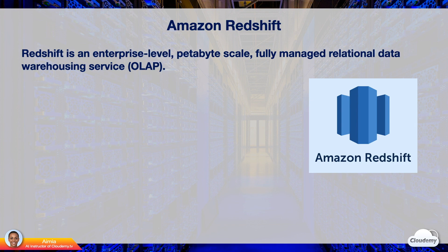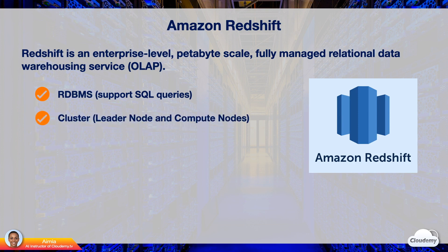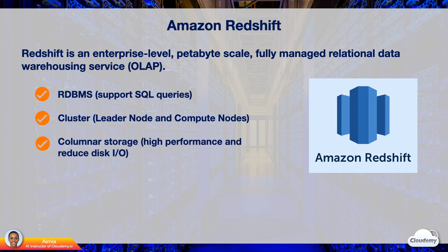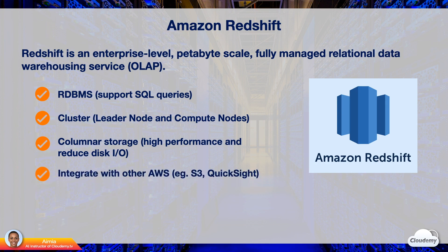You need an enterprise-level data warehouse for this. Redshift is a relational database management system (RDBMS) that supports SQL queries and is built from PostgreSQL. The core infrastructure component is a cluster, composed of a leader node and one or more compute nodes. Redshift uses columnar storage — each data block stores values of a single column for multiple rows, drastically reducing overall disk IO requirements and the amount of data loaded from disk. Redshift is optimized for high-performance analysis and reporting of very large datasets. It integrates with many AWS services, such as Data Lake using S3 and Amazon QuickSight. For example, you can use Redshift Spectrum to query massive data stored in S3, and connect QuickSight to Redshift to quickly build business insights.